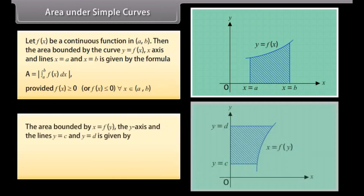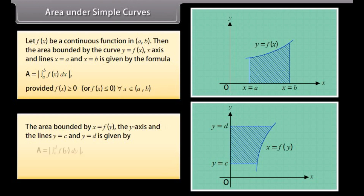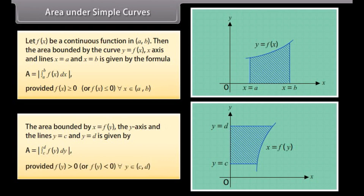The area bounded by x = f(y), y = c, and y = d is given by A = |∫ from c to d of f(y) dy|, provided f(y) > 0 or f(y) < 0 for each y in [c, d].